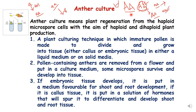Pollen-containing anthers are removed from a flower, they are put in a culture medium, and some microspores survive and develop into tissue. If embryonic tissue develops, it is put in a medium favorable for shoot and root development. If it is callus tissue and it is put in a solution of hormones, then it will differentiate and develop root and shoot tissue.